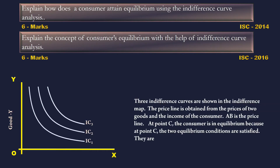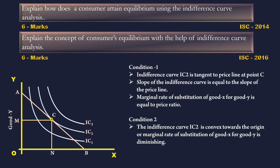Three Indifference Curves are shown in the Indifference Map. The price line is obtained from the prices of the two goods and income of the consumer. AB is the price line. At point C, the consumer is in equilibrium because at point C, the two equilibrium conditions are satisfied. Condition 1: Indifference Curve IC2 is tangent to the price line at point C.